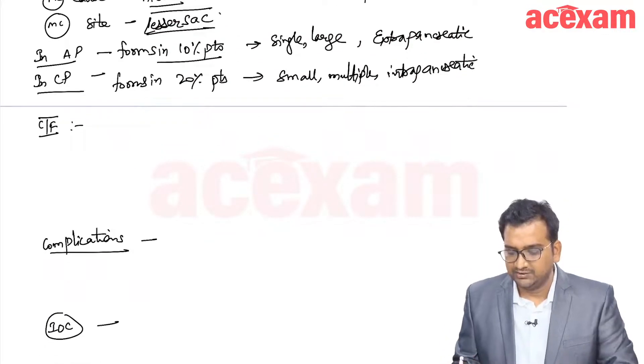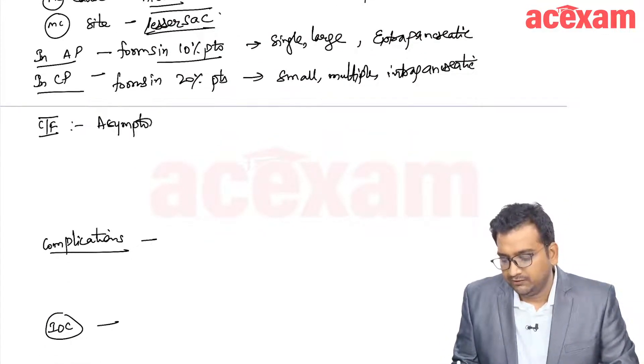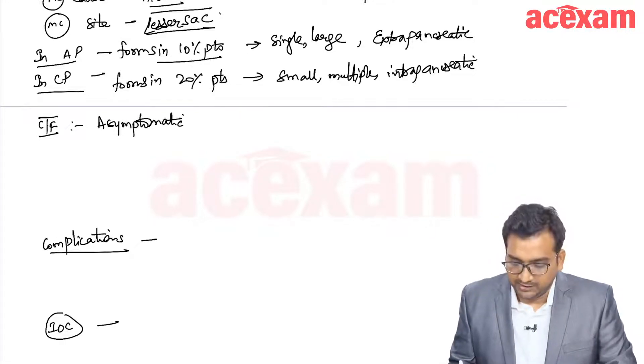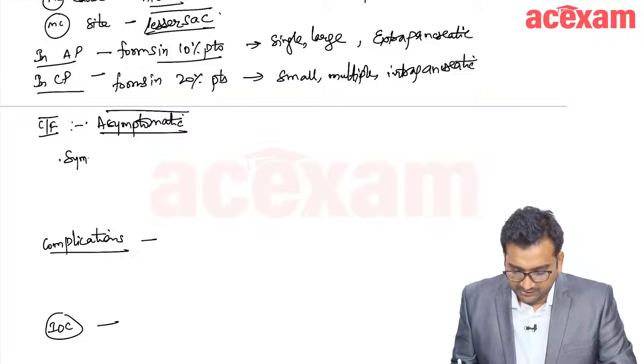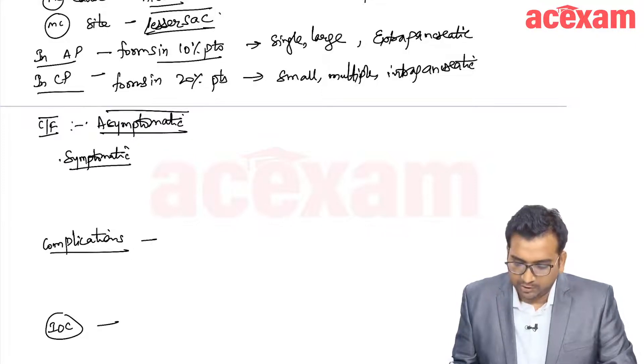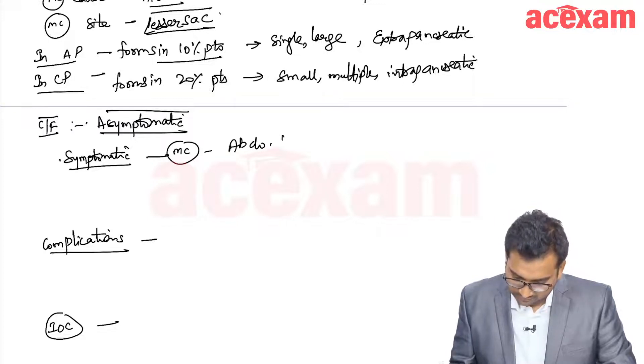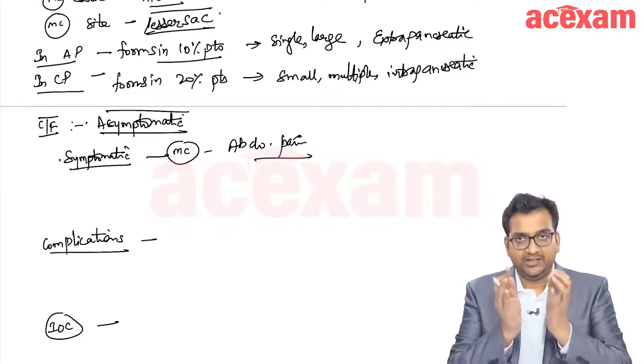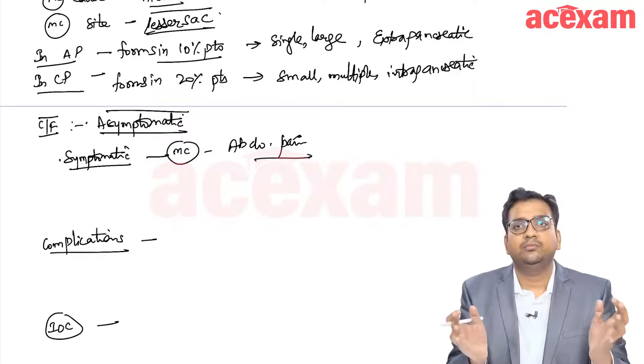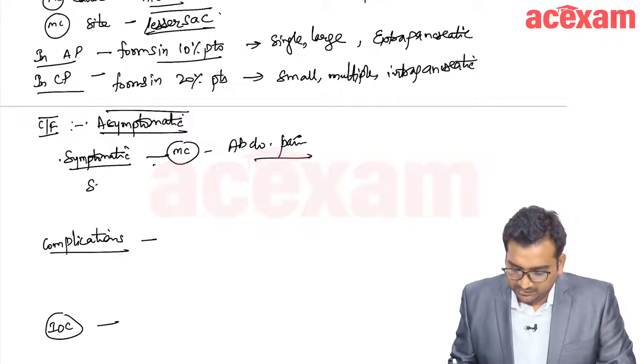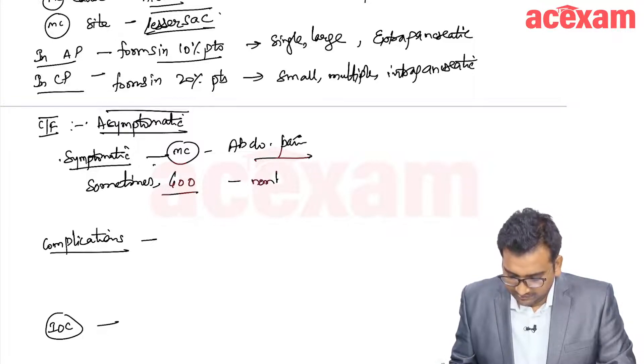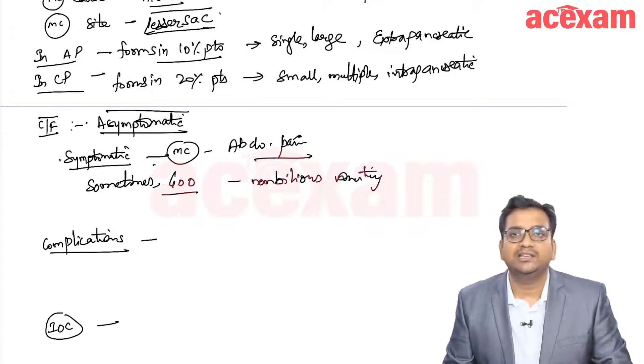What are the clinical features? Generally, the patient is asymptomatic and on routine evaluation, we are seeing a pseudocyst. In case if the patient is symptomatic, most common symptom is abdominal pain. Sometimes the cyst is in lesser sac and it grows so big that it compresses the duodenum and leads to features of gastric outlet obstruction with non-bilious vomiting. The vomiting will consist of undigested food particles.